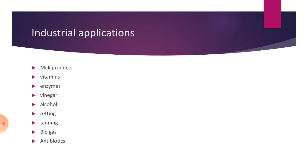Similarly, curing of leather: we get leather from animal products, and to make them useful, we have to subject them to various processes like curing — which is again done by certain bacteria. Similarly, tanning of leaves — tobacco leaves and tea leaves — to make them useful to mankind, they have to be tanned. Again, it is done by certain bacteria, especially Bacillus megaterium.